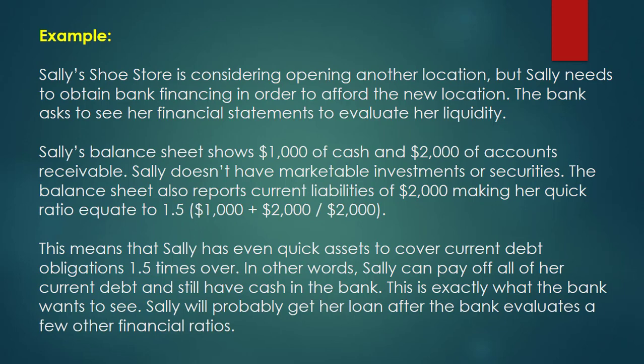The balance sheet also reports current liabilities of $2,000, making her quick ratio equal to 1.5. That means $1,000 plus $2,000 divided by $2,000 equals 1.5. This means that Sally has enough quick assets to cover her current debt obligations 1.5 times over.